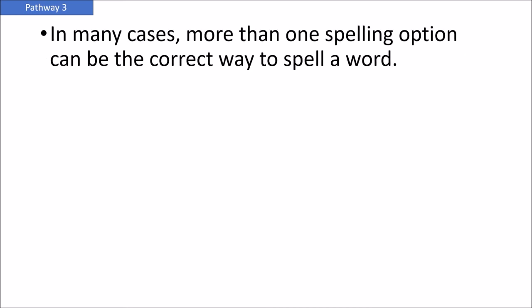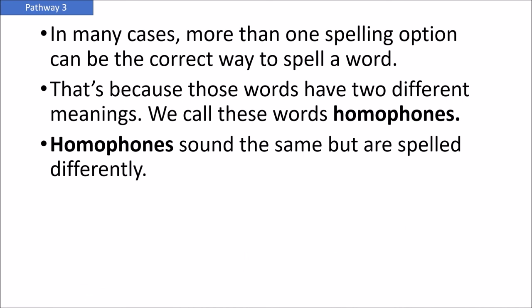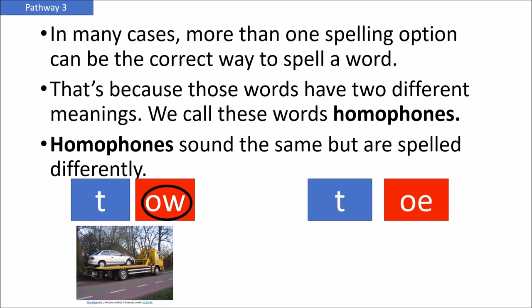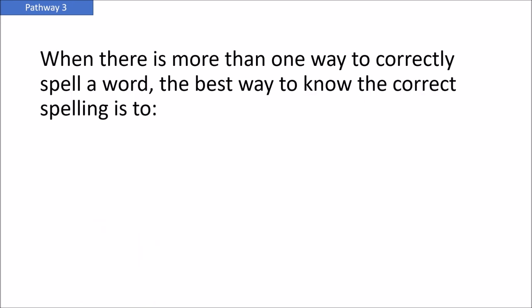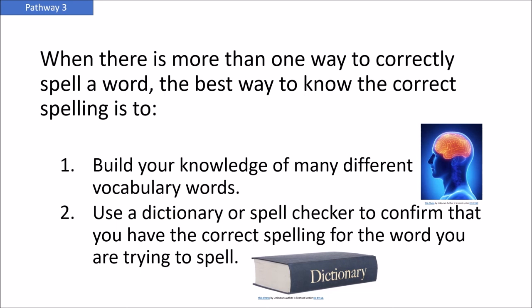In many cases, more than one spelling option can be the correct way to spell a word because those words have two different meanings — we call these words homophones. Homophones sound the same but are spelled differently. For example, the word TOW can be spelled T-O-W, meaning for one vehicle to move another vehicle. TOW can also be spelled T-O-E, meaning the toe on your foot. The best way to know the correct spelling is to build your vocabulary knowledge and use a dictionary or spell checker to confirm.